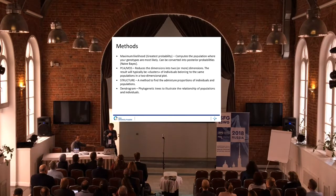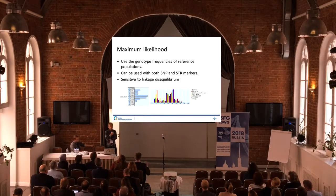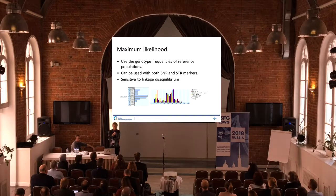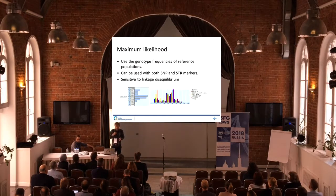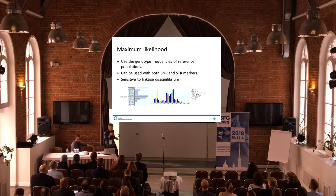Starting with the maximum likelihood method, we use genotype frequencies from reference populations, as I mentioned, and it can be used on both SNP and STR markers as long as we have the reference data sets. It is sensitive to the linkage disequilibrium of the markers, as I talked about in my previous talk, so we need to consider this when computing the likelihood.